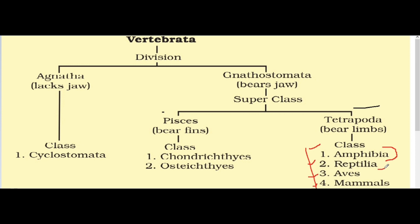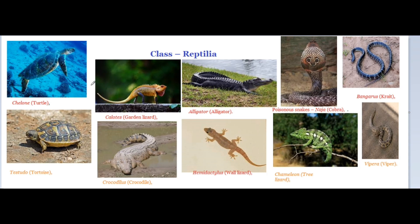Which are the examples for Class Reptilia? Chelonia (turtle), Testudo (tortoise), Calotes (garden lizard), crocodile, alligator, Hemidactylus (wall lizard), and poisonous snakes such as Naja (cobra), Bungarus (krait), chameleon (tree lizard), and Vipera (viper). These are highly poisonous snakes. These are all important examples for Class Reptilia, especially asked in NEET examinations.